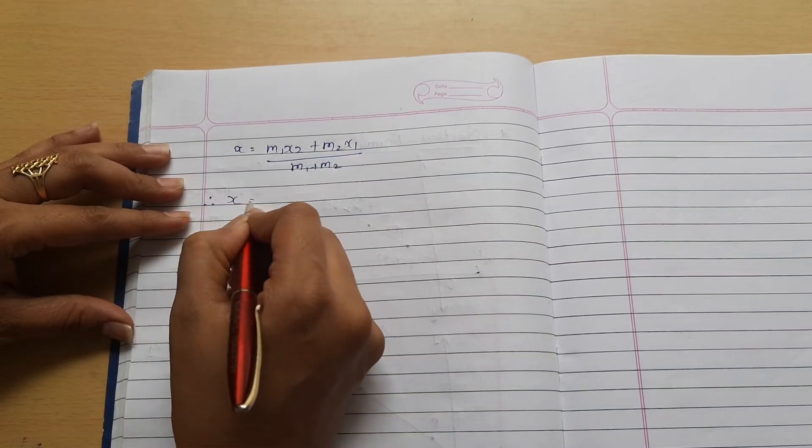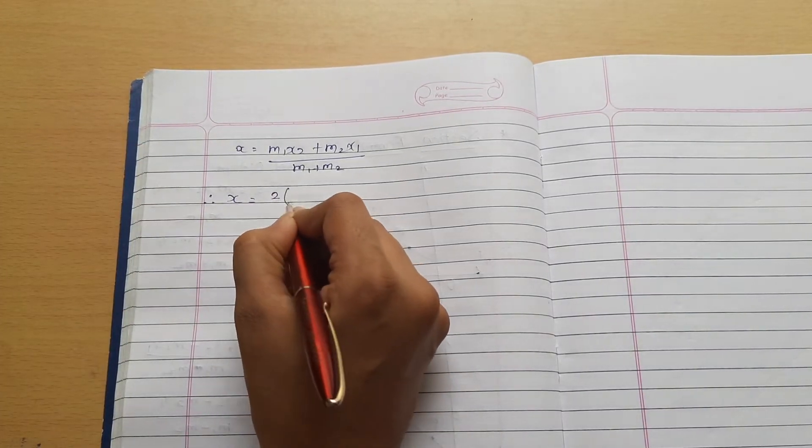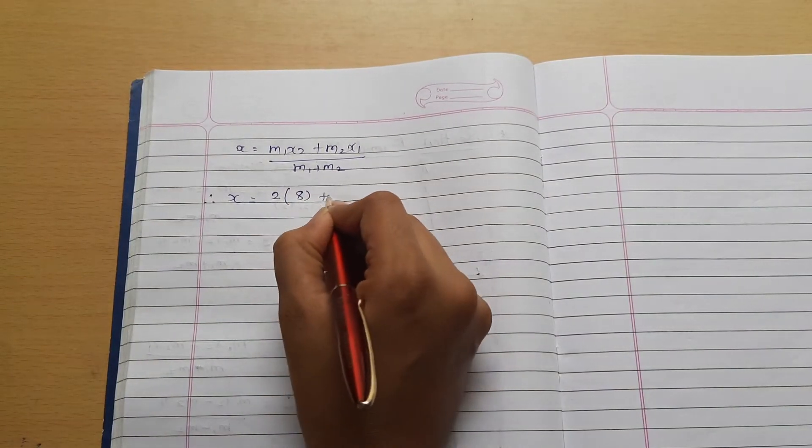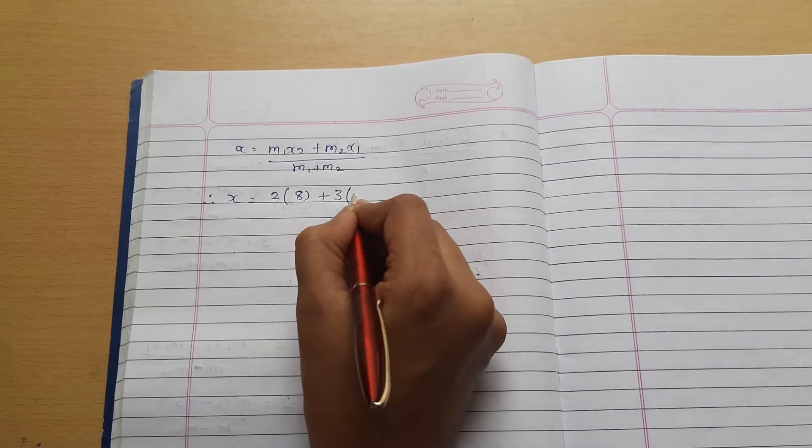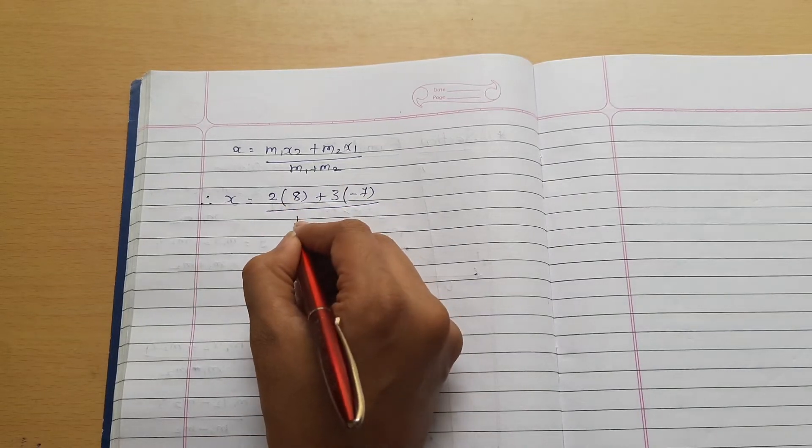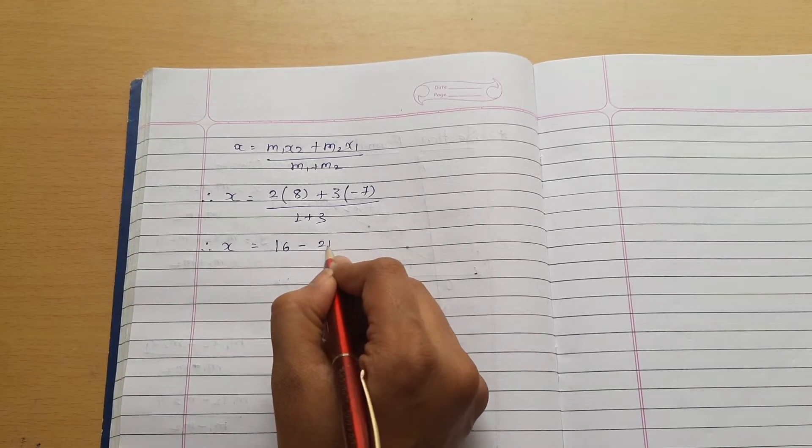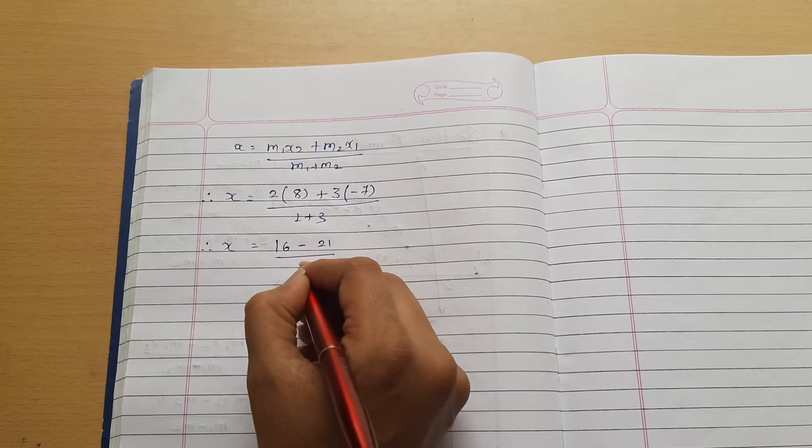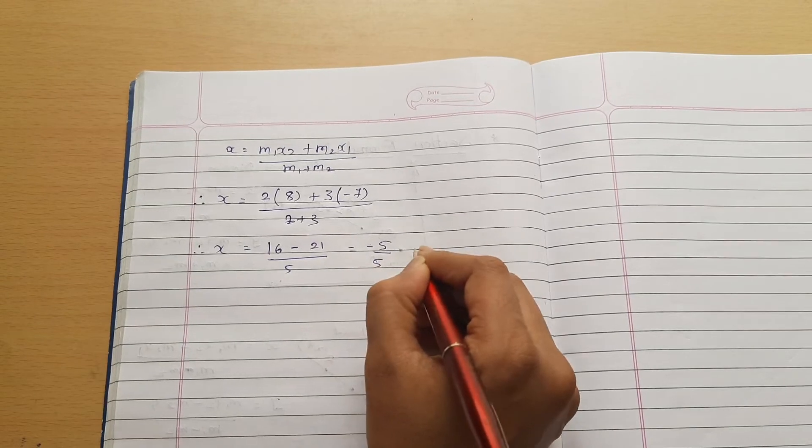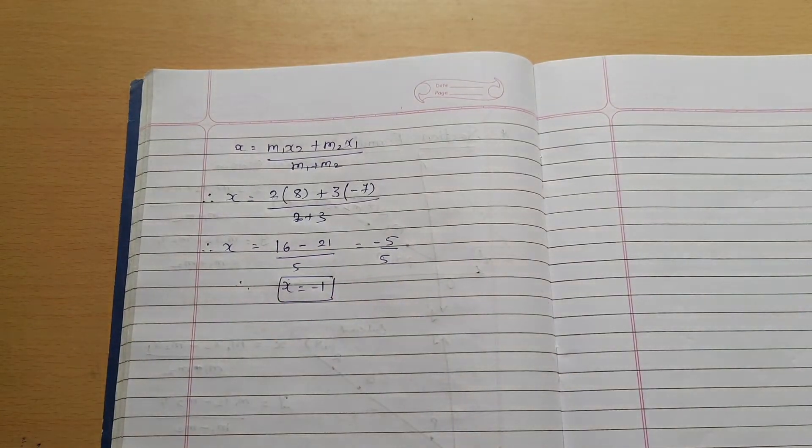Now m1 is 2, x2 is 8 plus m2 is 3 and x1 is minus 7 divided by m1 plus m2, 2 plus 3. So x equals 16 minus 21 divided by 5, so this will be minus 5 divided by 5, it means x equals minus 1.